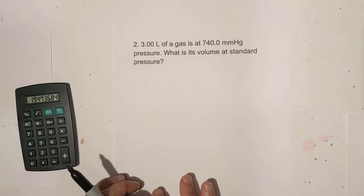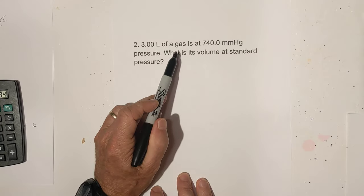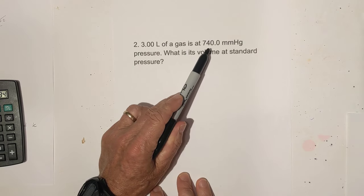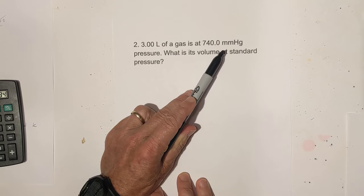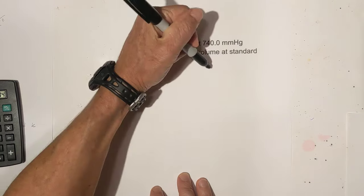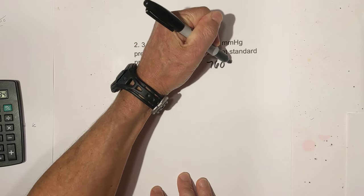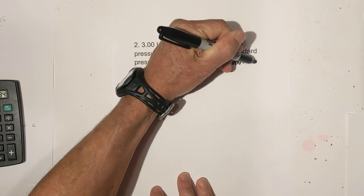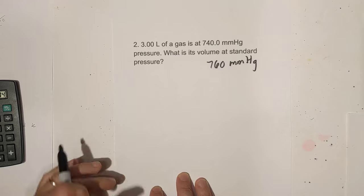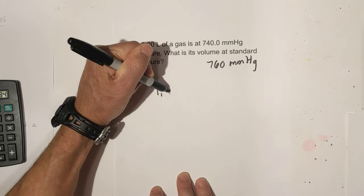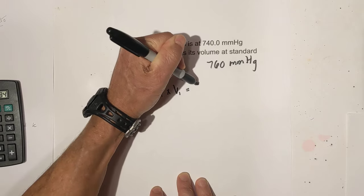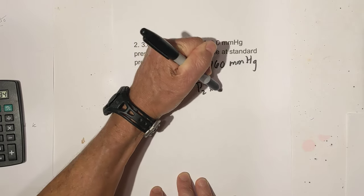This one is very similar. We have three liters of a gas at the pressure of 740 millimeters of mercury. What is the volume at standard pressure? Well, standard pressure is 760 if you didn't know that. So let's set it up. We've got P1 times V1 equals P2 times V2.